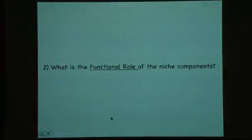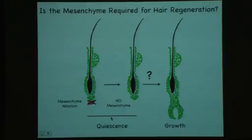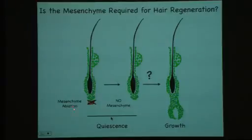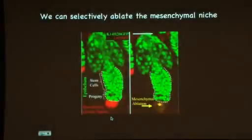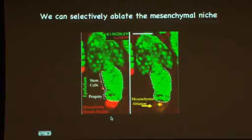Next we wanted to ask about the functional role of these niche components. Both the epithelial and the mesenchymal component are required for hair regeneration. We know that signals are released from the mesenchyme, but it had not been tested whether the mesenchyme is required for hair regeneration. Padelis did this experiment by utilizing two transgenics: GFP shows the follicle, glands, stem cells, and progeny; and RFP marks the mesenchymal component. He can laser-ablate this component using the two-photon laser, resulting in follicles that no longer have a mesenchyme.